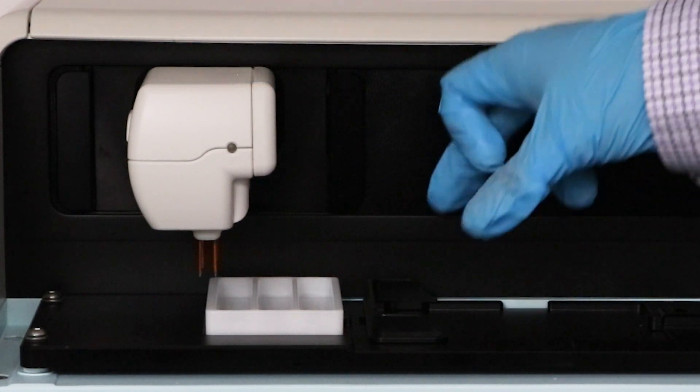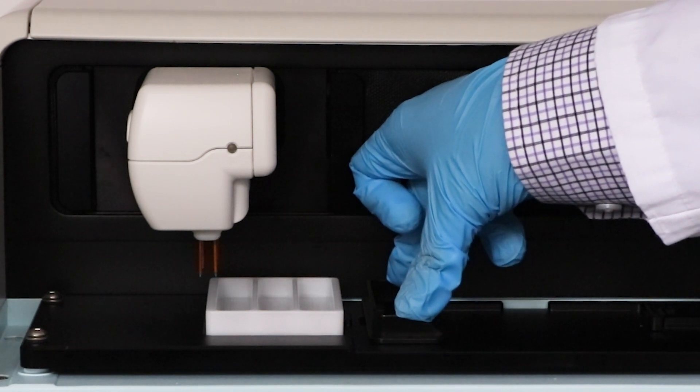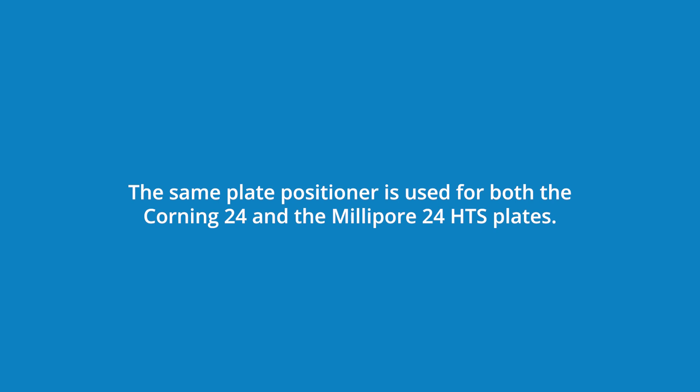Ensure that the C24 and 24 plate positioner is plugged into the plate measurement area. The sink plate positioner is used for both the Corning 24 and the Millipore 24 HTS plates.